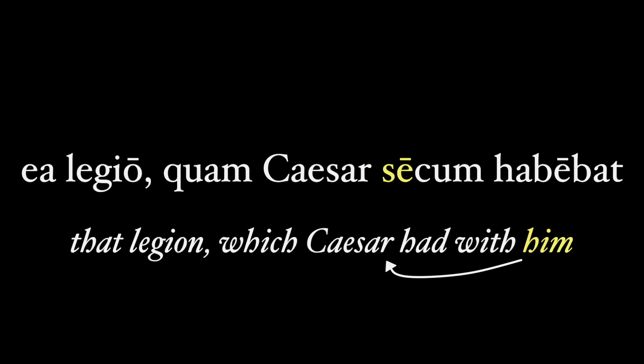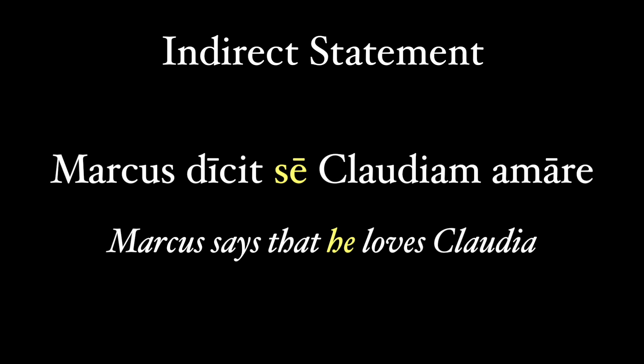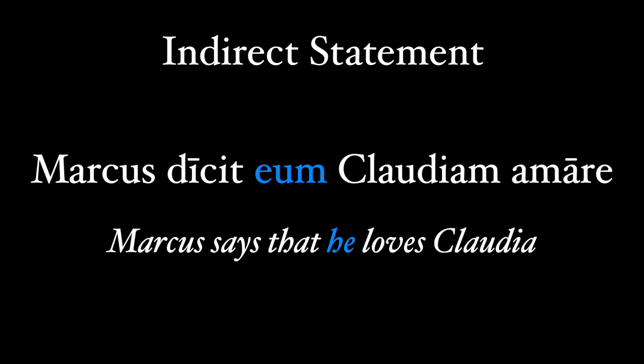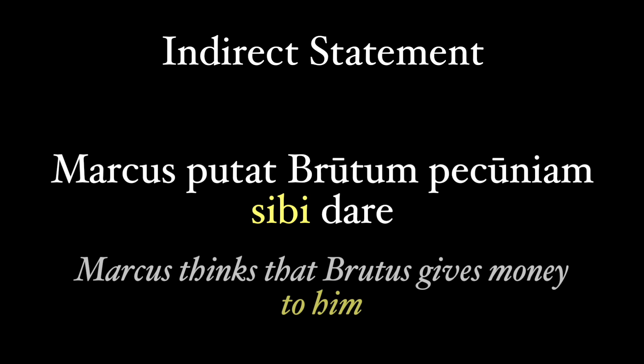This concept is really important in indirect statement, where English is vague but Latin is very specific. In the phrase 'Marcus dicet se Claudiam amare' — Marcus says that he loves Claudia — the 'he' is the same as the subject, so Marcus loves Claudia. But if we change se to eum, hunc, or illum, it can still be translated 'Marcus says that he loves Claudia,' but now it's a different guy, not Marcus. Likewise, 'Marcus putat Brutum pecuniam sibi dare' — Marcus thinks that Brutus gives money to him — the 'to him' is Marcus, reflecting back to the subject of the sentence. As we get more complicated in indirect statements, this use of sui, sibi, se/sese versus eum or eam becomes very important.